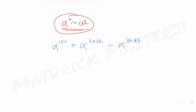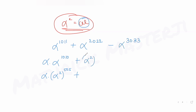Converting α² to omega, we split α^1011 as α · (α²)^505, since 2×505 = 1010. For α^2022, since 2022 is even, we write (α²)^1011. For α^3033, we split it as α · (α²)^1516, since 2×1516 = 3032. Now substituting α² = ω throughout.